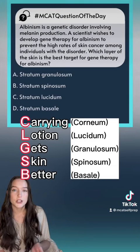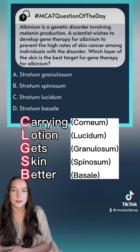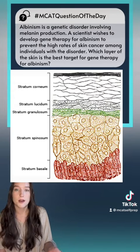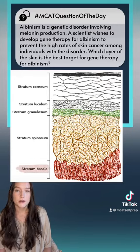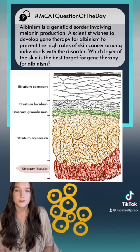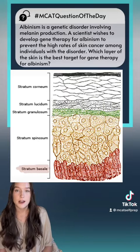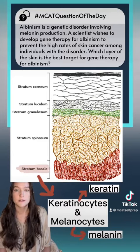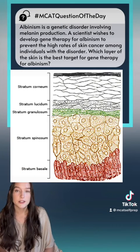A way I like to remember the order of them is to say: 'Carrying lotion gets skin better.' The easiest way to understand the function of each layer is to look at them from the bottom up. The bottom layer, the stratum basale, is where rapid cell division happens. The cells found there are keratinocytes and melanocytes, which produce keratin and melanin respectively.